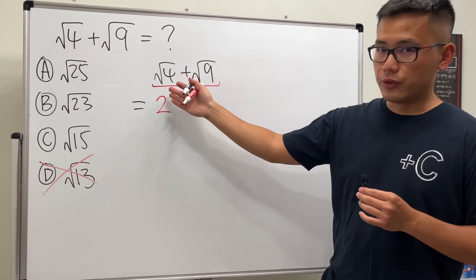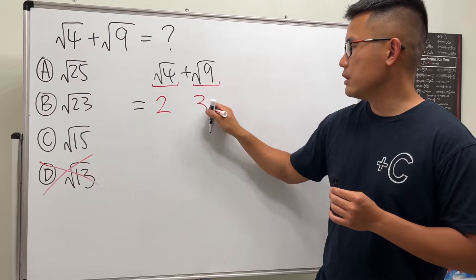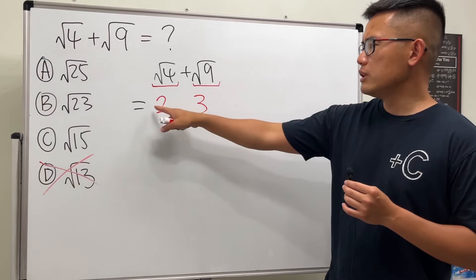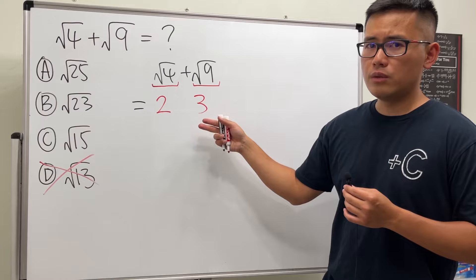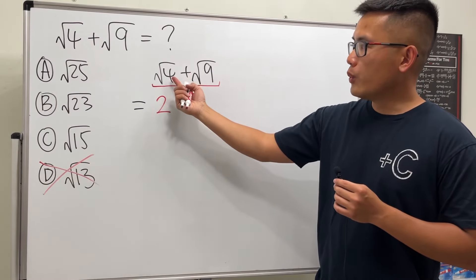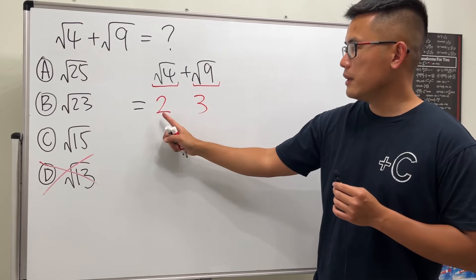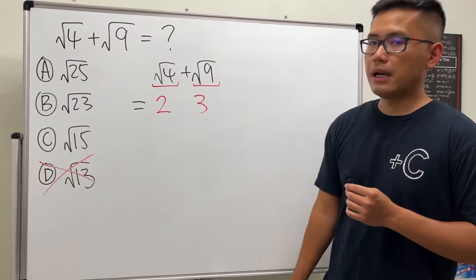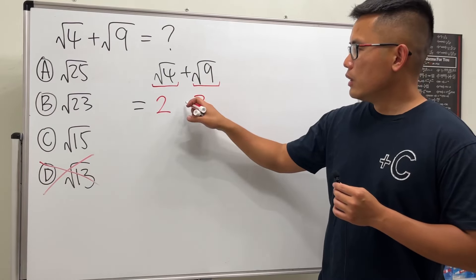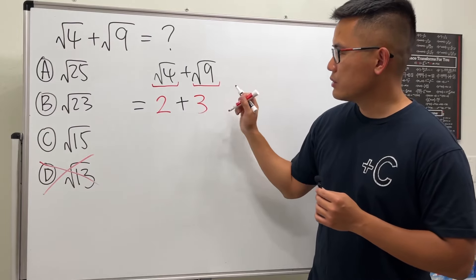And then square root of 9 is equal to positive 3. Some people may say, hey, shouldn't this be negative 2 as well or negative 3 as well? No, because the definition of this symbol, we will always give just a positive answer. So it's the positive 2 and then this right here is just the positive 3. So we have this and then we're just going to add them together, and then 2 plus 3 is 5.